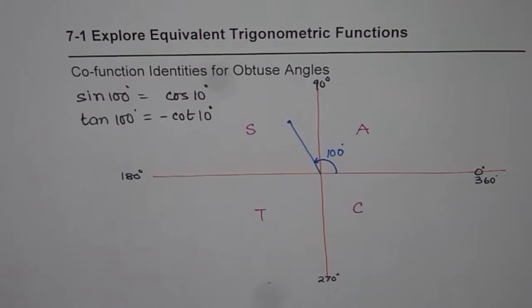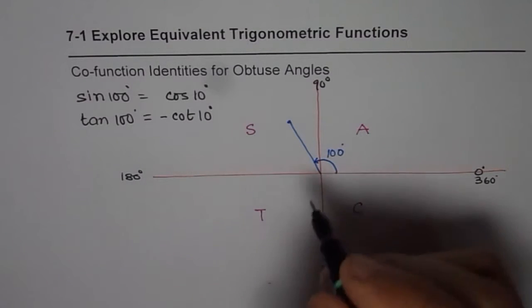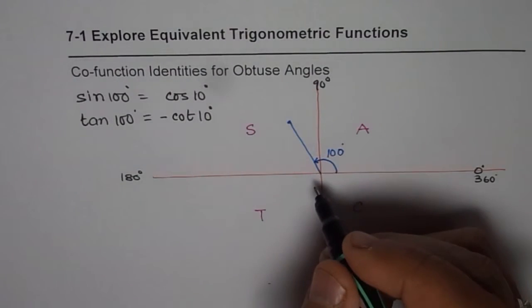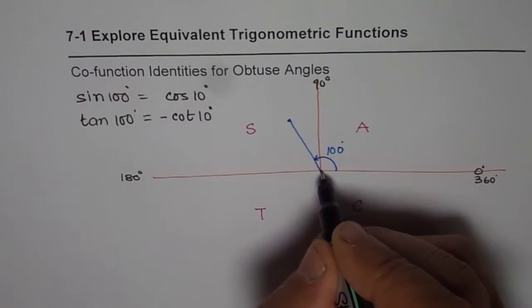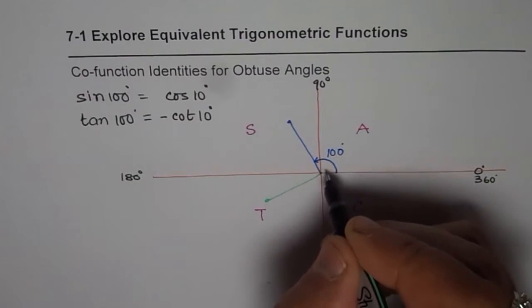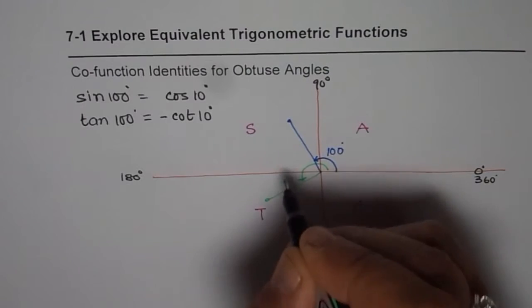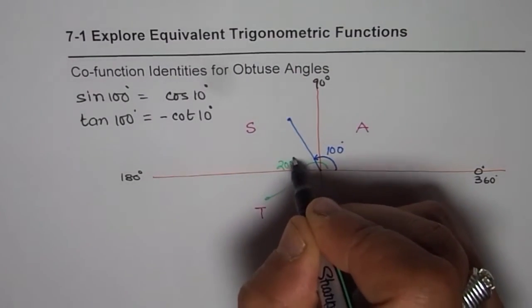So that is how we get in degrees, when we have a point in quadrant 2. Now, let us consider a point in quadrant 3. So in that case, let me take an angle, which is, let's say, 200 degrees. So this time, I've taken an angle, which is 200 degrees.